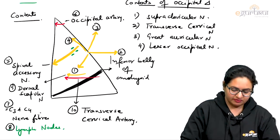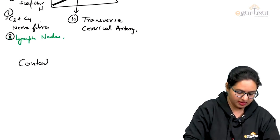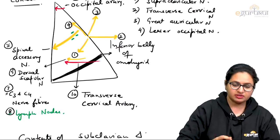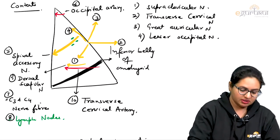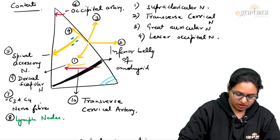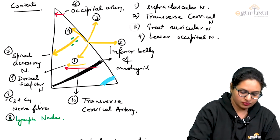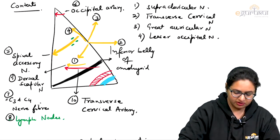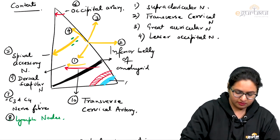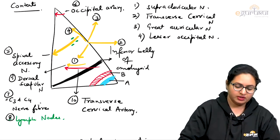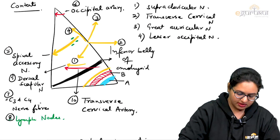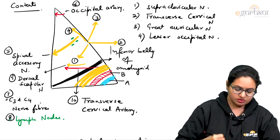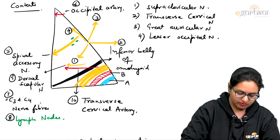Now, for the contents of the subclavian triangle: the subclavian vein is present on the most anterior side, just posterior to it is the subclavian artery — specifically the third part of the subclavian artery. Going slightly further, we have the brachial plexus, specifically the trunks of the brachial plexus. These are labeled A — subclavian vein, B — subclavian artery, C — trunks of the brachial plexus.